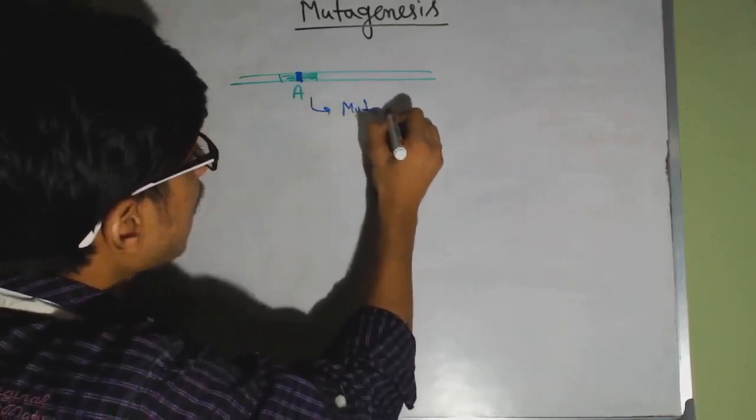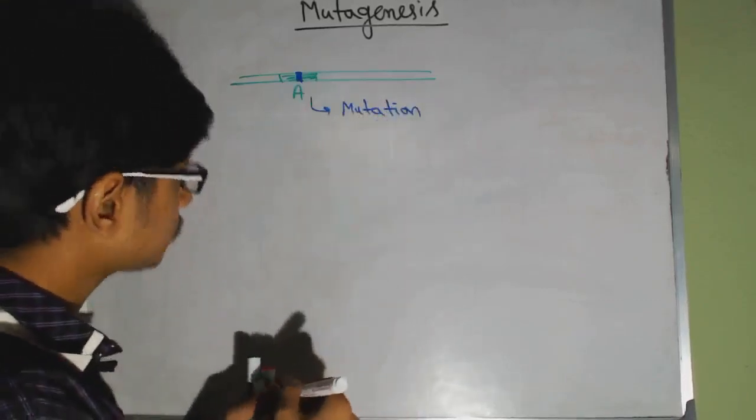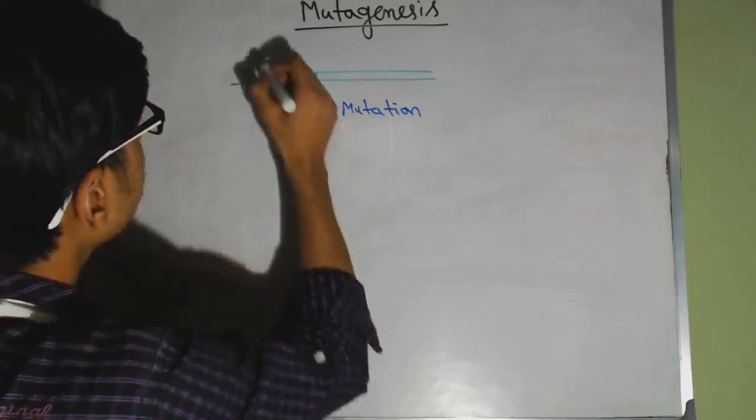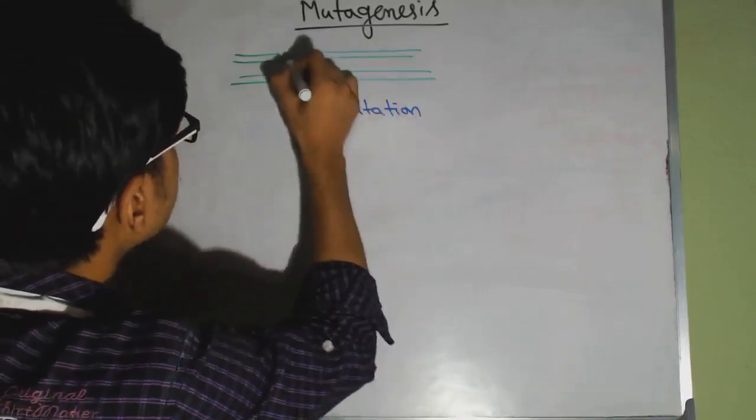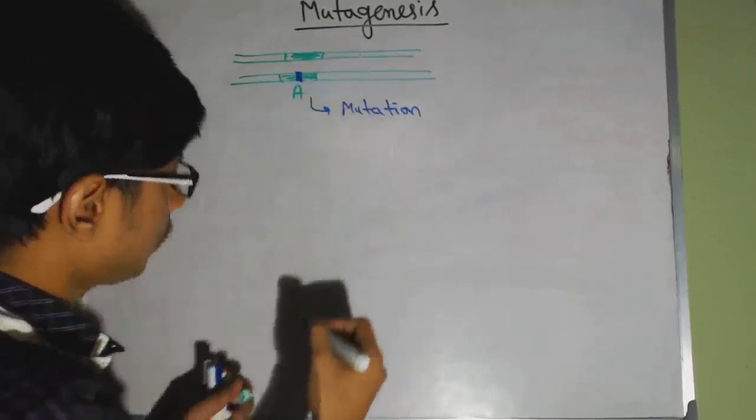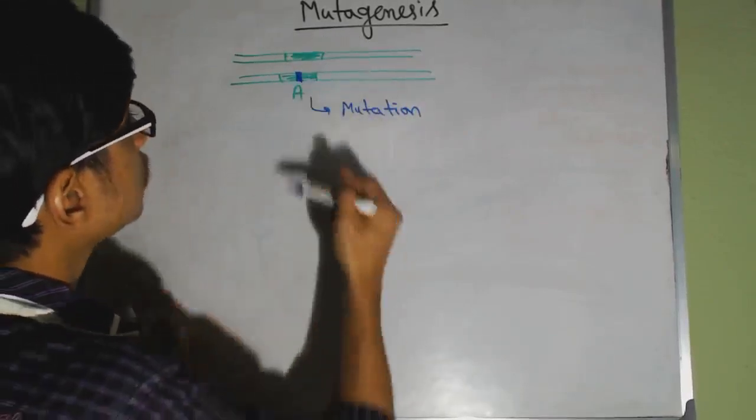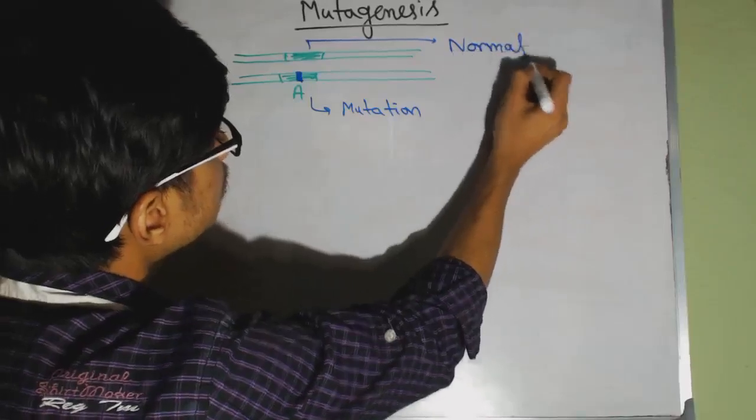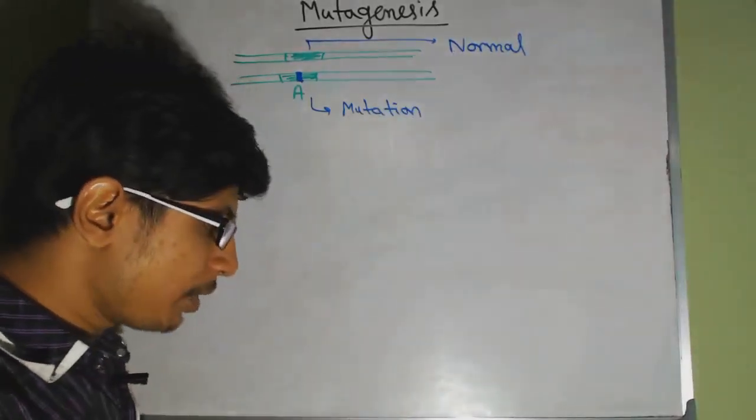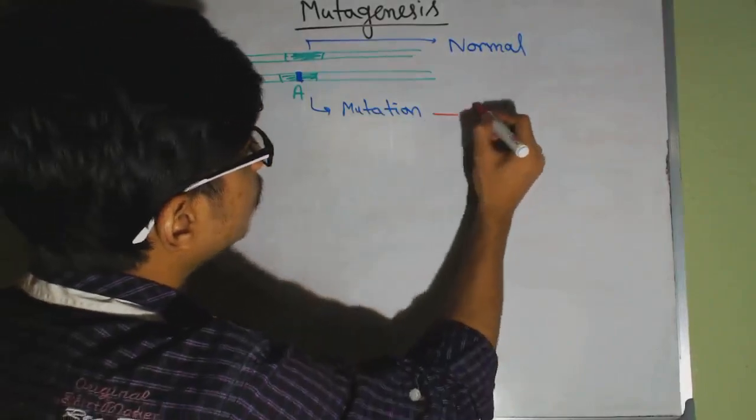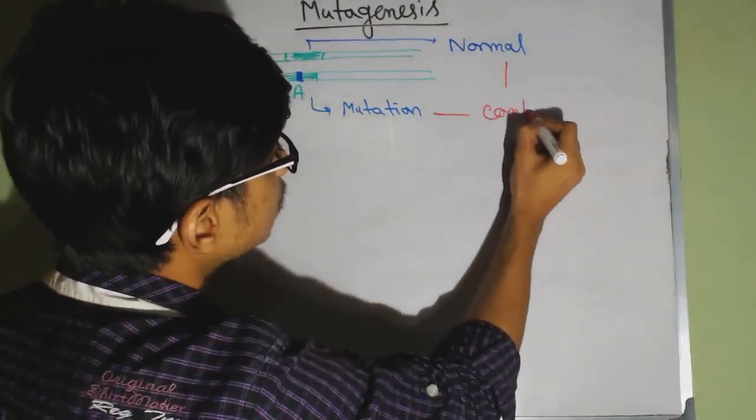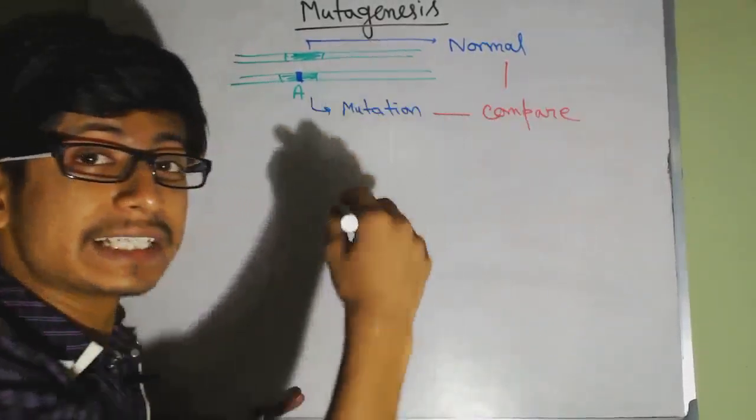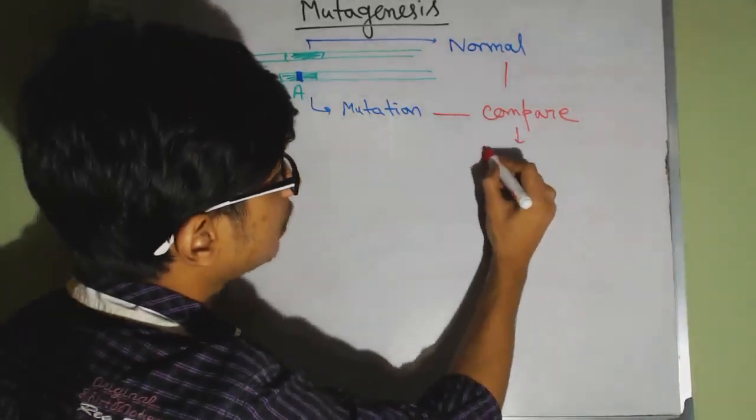If we see this, this will be a mutation. If I draw another image here where we draw the normal cell, in this case this is a normal cell, normal gene, this is a mutation. We want to compare this mutation with the normal scenario for that gene to see the biological response.